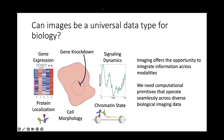These two advances together create the possibility of images being a universal data type for biology. One advantage is the ability to integrate information across measurement modalities while conserving cellular identity — for example, performing live cell imaging of a reporter, fixing the cells, and then performing spatial transcriptomics like SeqFISH or MERFISH. Because all measurements were performed with imaging, we have a natural way to conserve cellular identity. A major challenge ahead is the construction of computational primitives — key algorithmic building blocks that can perform essential computer vision operations like cell segmentation or cell tracking seamlessly across diverse biological imaging datasets.